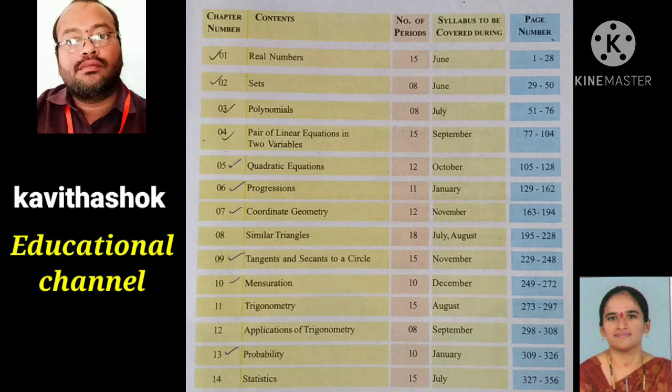In other words, there are four topics: to calculate the degrees, the value of the polynomials, the division algorithm for polynomials. These topics are called division algorithm for polynomials. This is page number 71, chapter 3.